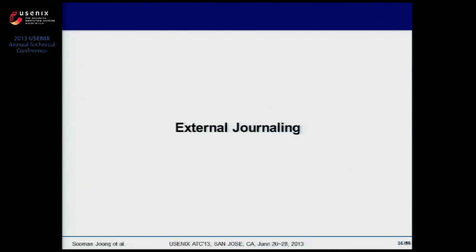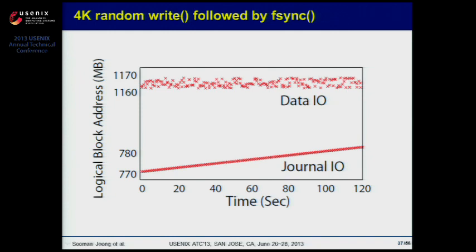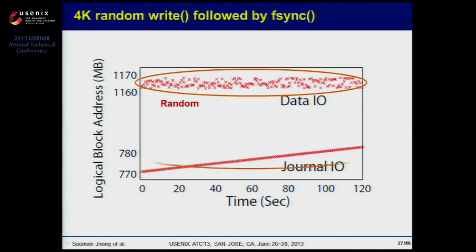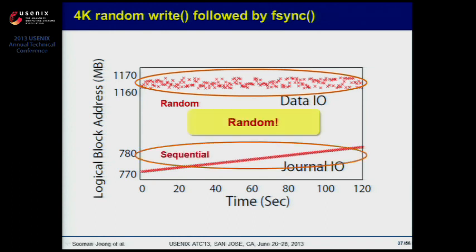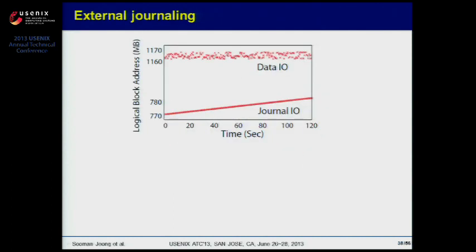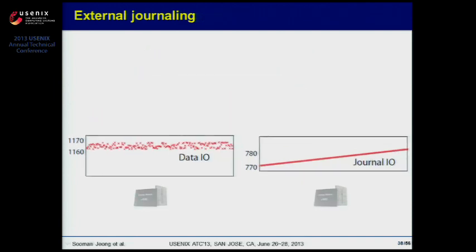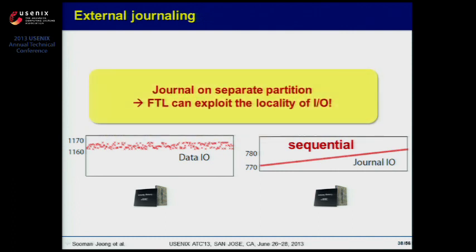Next, external journaling. This is the I/O trace for 4KB random write followed by fsync in EXT4. The upper range shows data I/O while the lower range shows journal I/O. Data I/O is random, while journal I/O is sequential, but together they mix and become random I/O. If we separate these two, XFS and EXT4 offer a feature to change where journal blocks are saved. Also, recent eMMC standards support physical partitioning of internal storage. Thus, we can physically separate data and journal I/Os, which leads the FTL to exploit locality of the I/O stream.